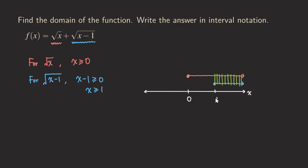You can see that one should be included because there is a solid dot at one, and for the square root of x, x equals one is also defined. So one is included as well. We can now shade the overlap directly on the number line: a solid dot at one, and everything greater than one.